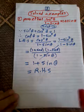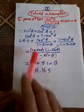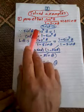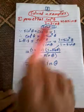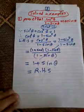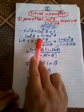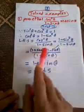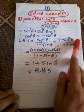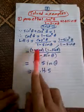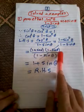Prove that cosine squared theta over one minus sine theta equals one plus sine theta. We know that sine squared theta plus cosine squared theta equals one, so cosine squared theta equals one minus sine squared theta. The left hand side equals cosine squared theta over one minus sine theta. We can factorize one minus sine squared theta as one plus sine theta times one minus sine theta.